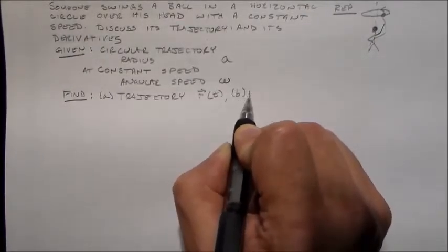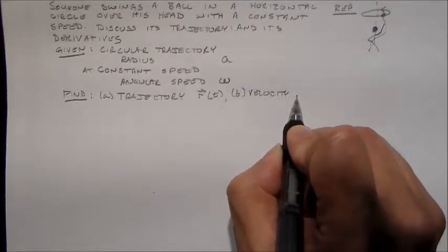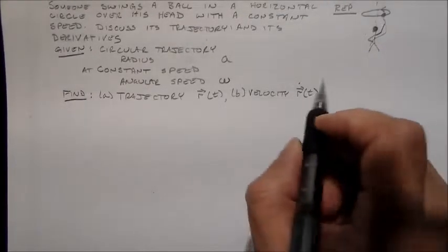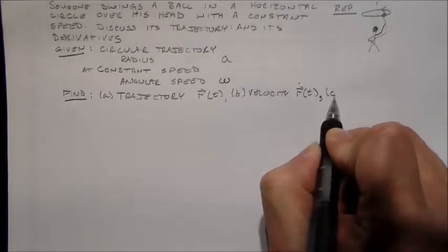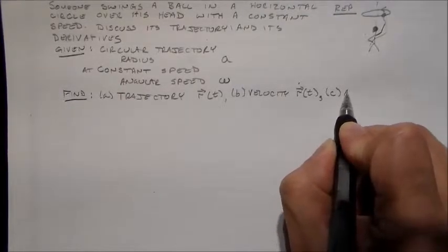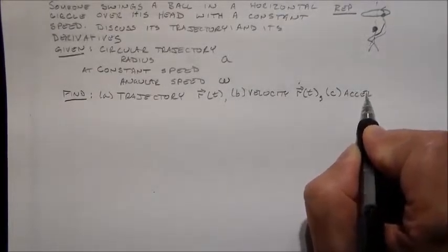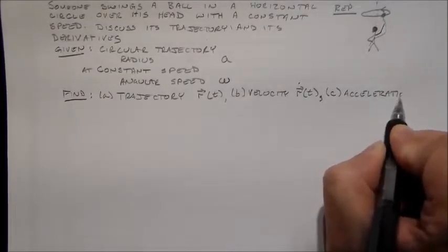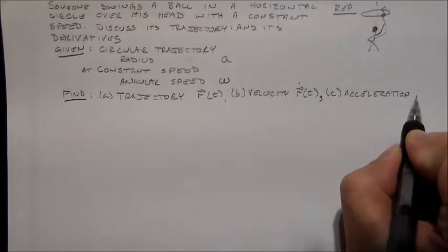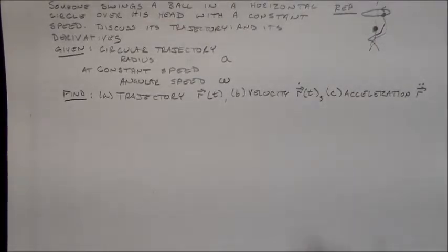Its velocity, which is R dot of t, or R prime of t in the book, but we're physicists, we're engineers, we're not mathematicians, so we use this very useful dot notation. Because we do time derivatives all by themselves all the time, and acceleration, R double dot, all right?